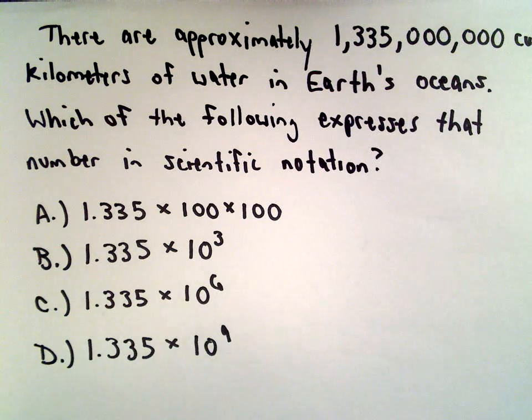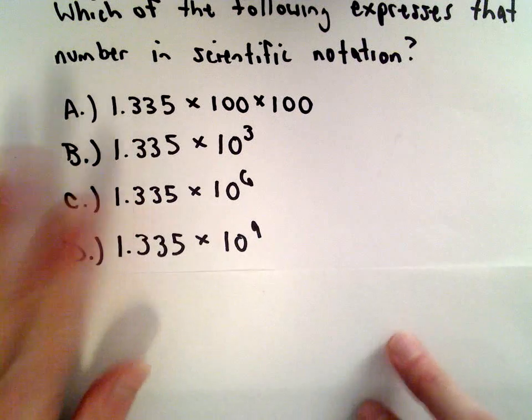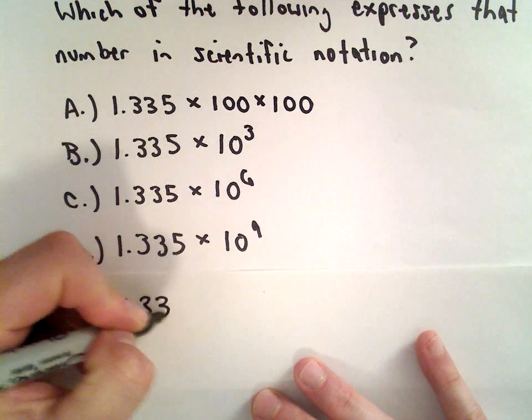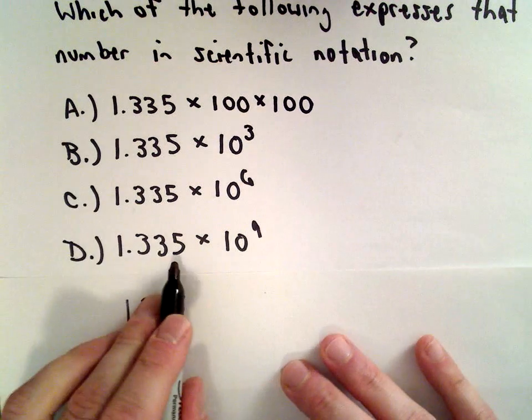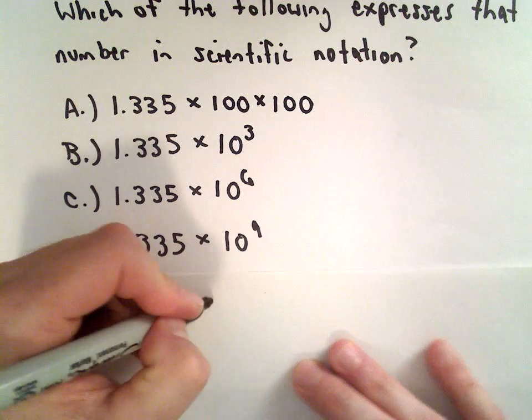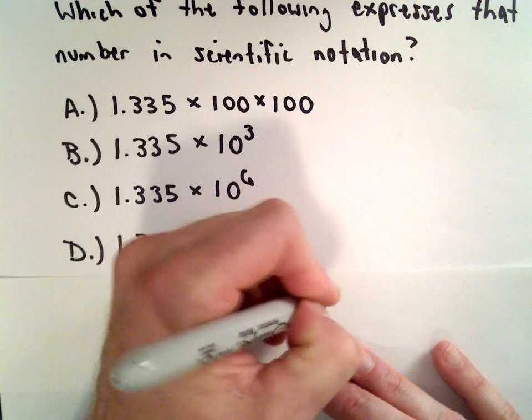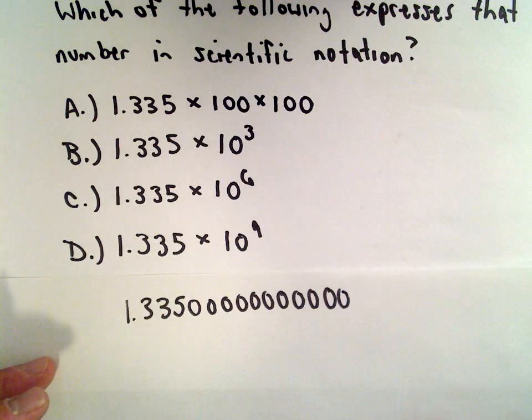Just to remind you, suppose they said write this number in scientific notation. To understand scientific notation a little bit: 1.335, I can always start adding zeros to that. That's not going to change its value at all. That's the exact same decimal. I'm just writing a bunch of zeros.